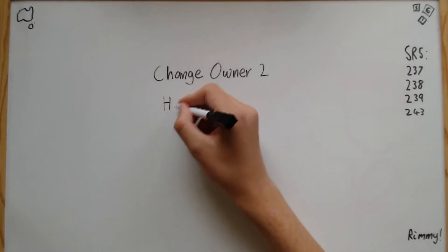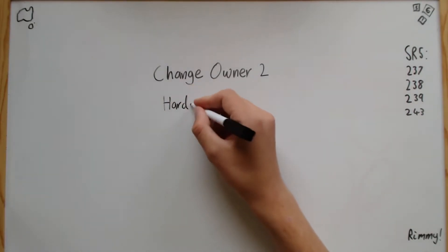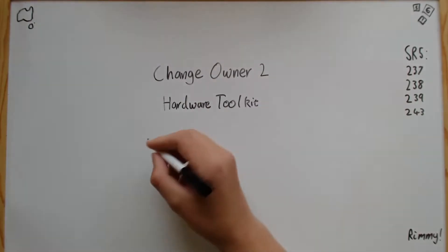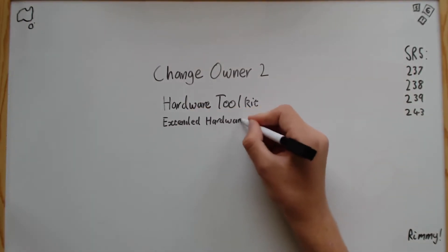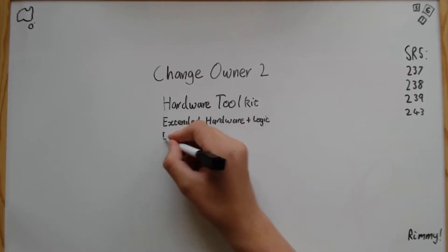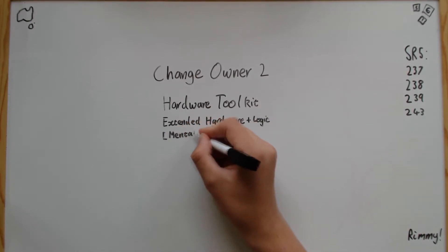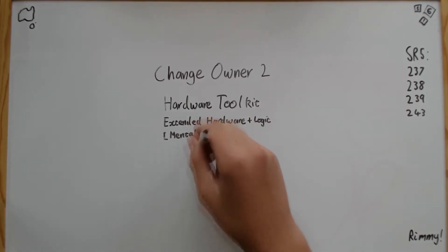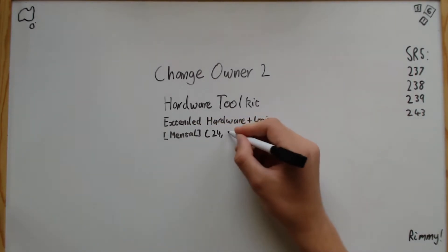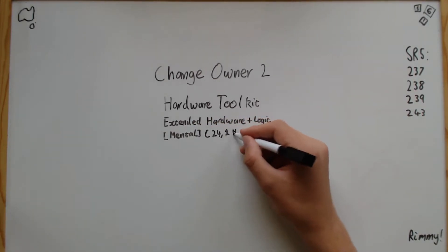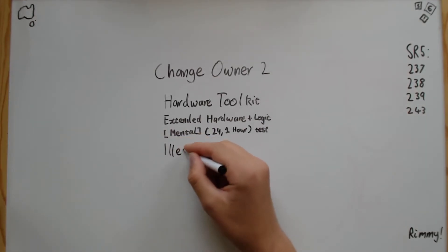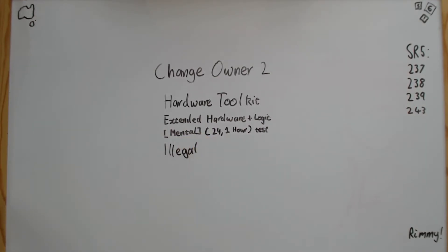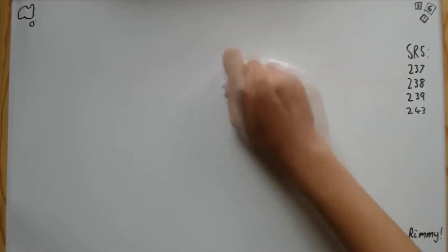The second way is to illegally change the ownership of a device by using a hardware toolkit. The test for this is an extended Hardware plus Logic, limited by Mental, with a threshold of 24 and a spacing of 1 hour. A glitch will result in the authorities being sent to report. Once this test is complete, the ownership is transferred to the preferred target, usually yourself.